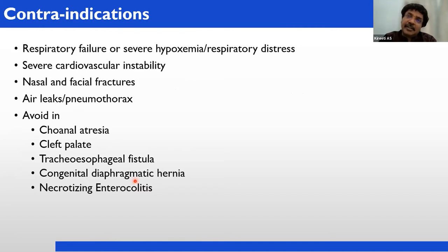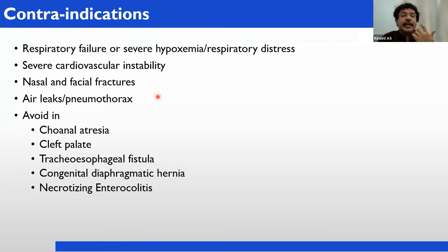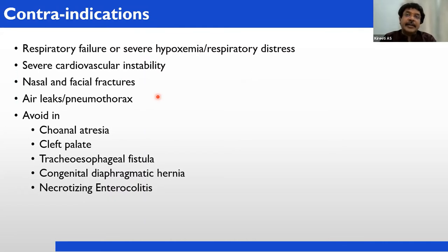You should also know the contraindications — conditions in which we should not put CPAP. Severe respiratory failure — saturation is very low, child is gasping or has complete absence of breathing — severe hypoxemia and severe respiratory stress. Severe cardiovascular instability — should not connect. Any nasal fractures or facial fractures — should not connect. Any air leaks such as pneumothorax — should not. Better to avoid in choanal atresia, cleft palate, tracheoesophageal fistulas, congenital diaphragmatic hernia, and necrotizing enterocolitis.